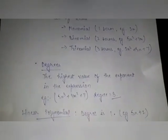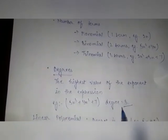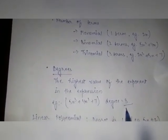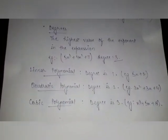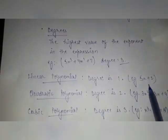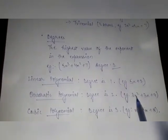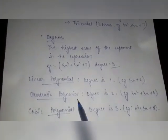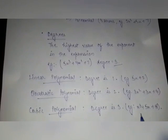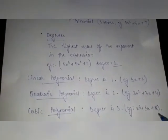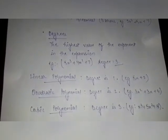On the basis of degree, the degree is the highest value of the exponent in the polynomial. For example, in 5x³ plus 4x² plus 7, the highest power is 3, so the degree is 3. Based on degree, we categorize polynomials into three types: linear (degree 1, e.g. 5x plus 2), quadratic (degree 2, e.g. 3x² plus 3x plus 4), and cubic (degree 3, e.g. x³ plus 5x plus 8).